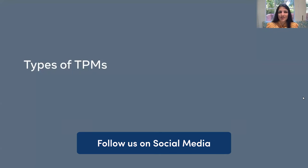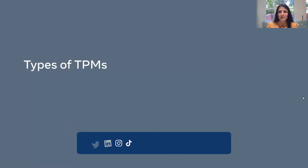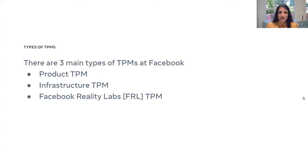At Facebook, there are primarily three main types of TPMs: a product TPM, infrastructure TPMs, and the Facebook Reality Labs TPM team — referred to as FRL. So if you see FRL TPMs mentioned anywhere, that stands for Facebook Reality Labs. We'll delve into each one of these in more detail and answer some questions towards the end.